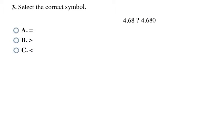Here I have two numbers and I have to decide if they're greater than, less than, or equal. Starting from the left: both have fours, both have a six in the tenths place, both have an eight in the hundredths place. Then I have a missing decimal place versus a zero — but you can add zeros onto the end of a decimal as many times as you want. So there's really an invisible zero on the first number too. These numbers are actually identical, which makes them equal, and my final answer is A.